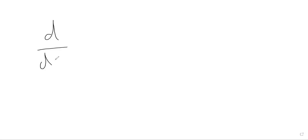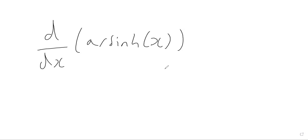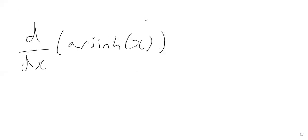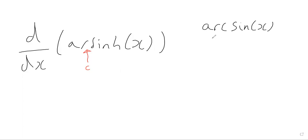This video is about differentiating the function arsinh(x), the inverse hyperbolic sine. The arsinh function is the inverse of the sinh function. Notice that there is no 'c' written between the 'r' and the 's' - so it is arsinh, not arcsinh. By comparison, the inverse of the sine function is arcsin(x), while the inverse of the sinh function is arsinh(x) with no 'c'.